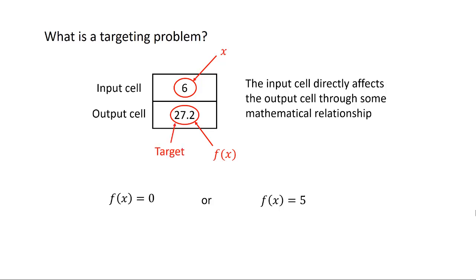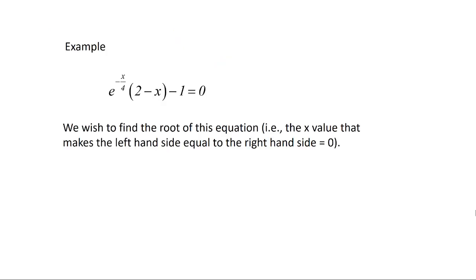The target here is going to be the output cell. And let's just say in this example we want the target to be 0. And we want to change the input cell, x. Let me go through an example. Here we have just a mathematical equation. And we wish to find the root of this equation. And the root is the value that makes the left-hand side equal to the right-hand side, which is the value of 0. So once we have found the root, the left-hand side is equal to 0.